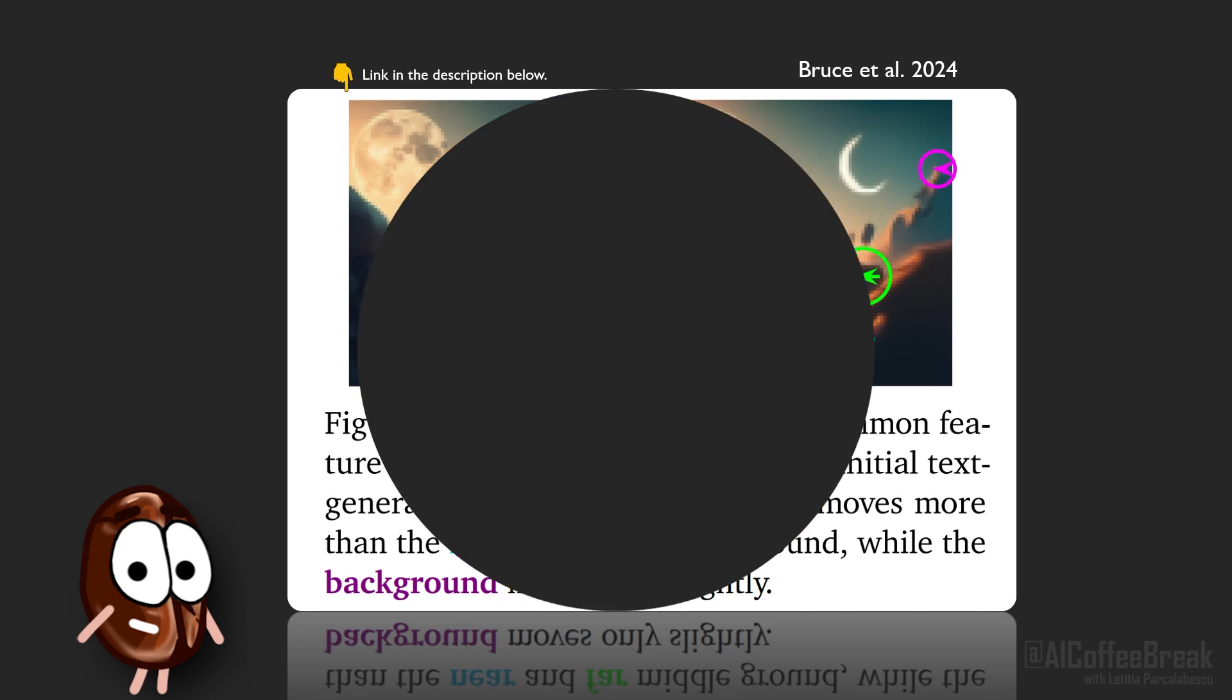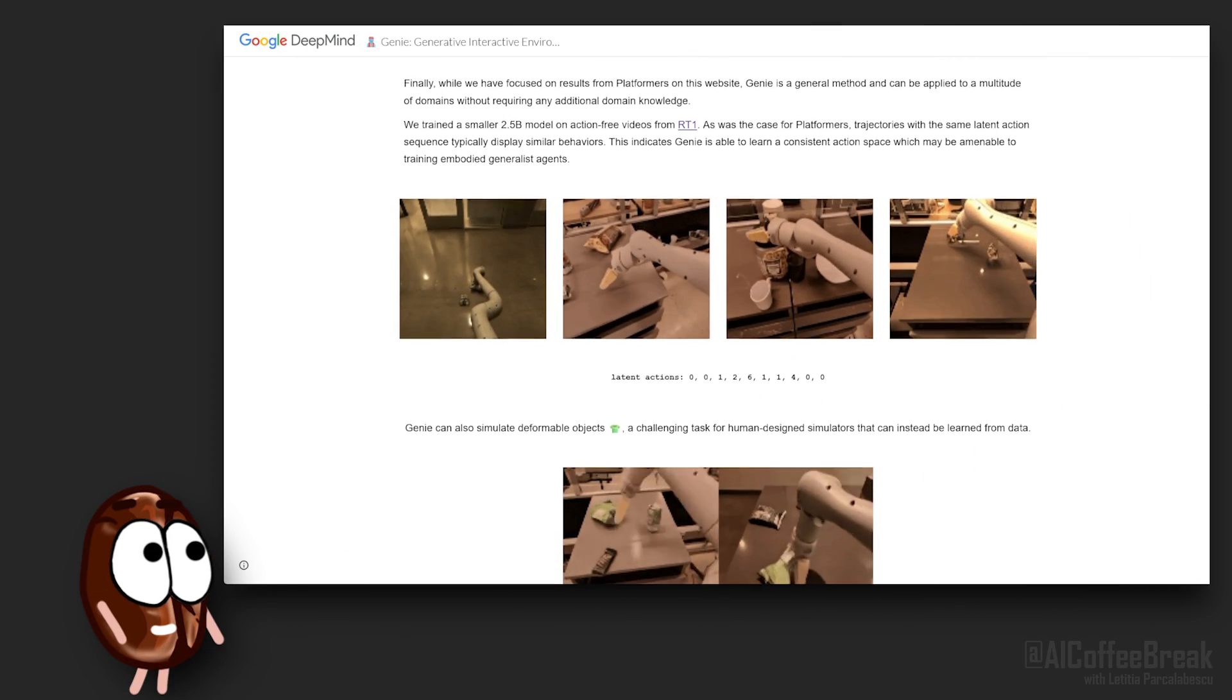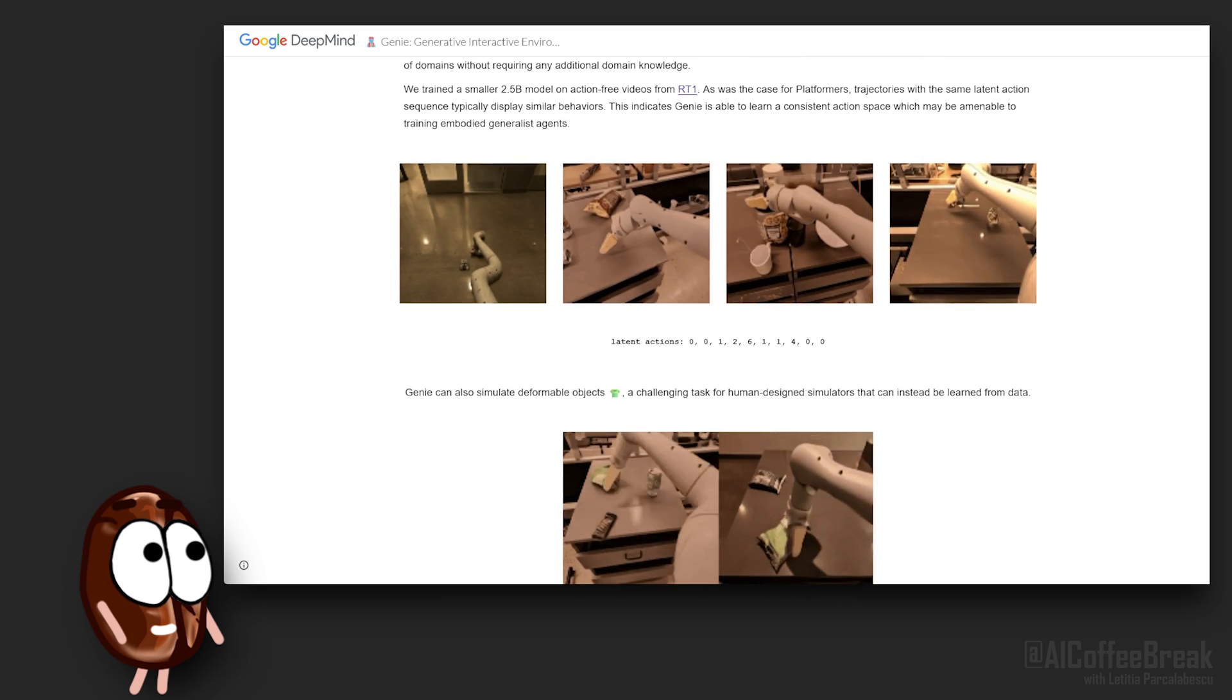But look, Genie can produce parallax which makes the foreground move more than the near and far middle ground, and the background moves only slightly. If you're not impressed yet, maybe this will help: Genie doesn't have to generate computer games all day. The authors trained a 2.5 billion parameter Genie model on the robotics dataset without action annotation, and Genie could infer the actions and control the robotic arm.